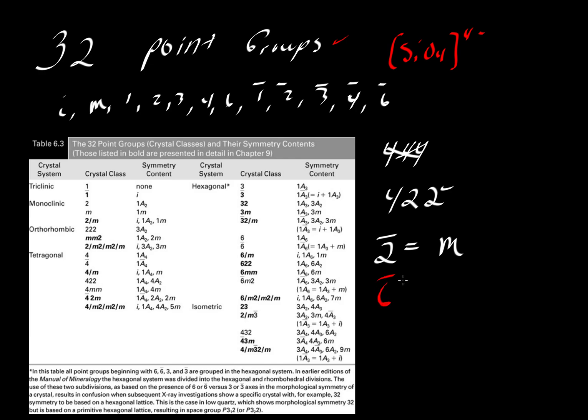Similarly, a bar 6 is equal to 3 over M, so we don't need two different kinds of notation for that. The 32 point groups leave out all the repeats and all that is not possible.